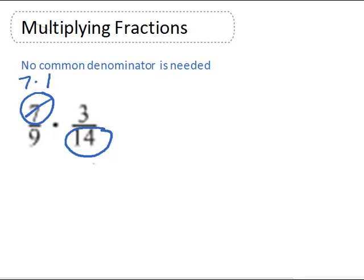We can reduce the 7s leaving 1/2. Similarly with the 3 and 9, 9 is 3 times 3, 3 is 3 times 1. The 3 is reduced, leaving a 1 on top and 3 in the denominator of the first fraction.